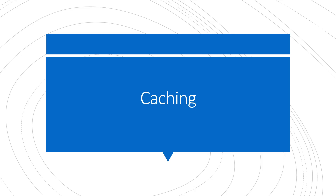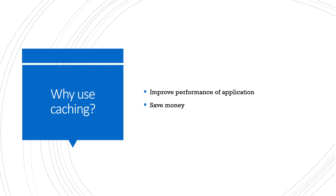In this video I'll be going over caching, which is one of the most important aspects when it comes to performance and system design. This is another video in my system design series, so if you're interested in this topic be sure to check out those other videos and subscribe. In simple terms, when you cache something you take data that would normally be stored on a hard drive or on disk and you put it into memory. The benefits are improved speed and performance, and as a side result it saves you money long term.